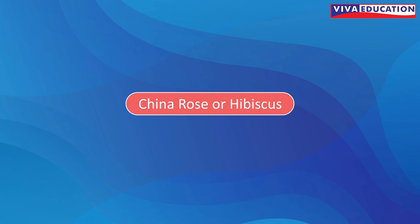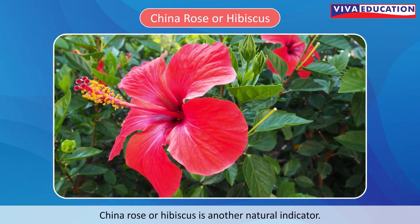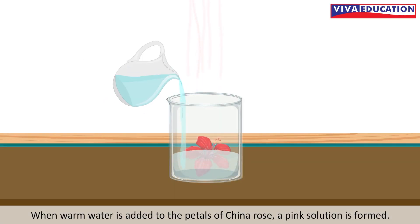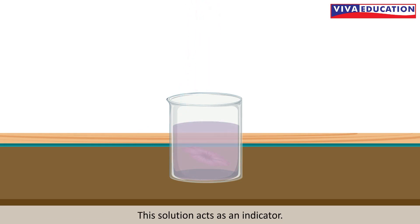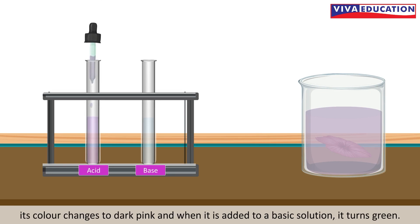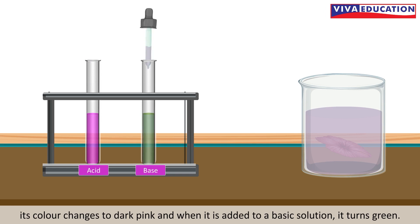China Rose, or Hibiscus, is another natural indicator. When warm water is added to the petals of China Rose, a pink solution is formed. This solution acts as an indicator. When this indicator is added to an acidic solution, its color changes to dark pink, and when it is added to a basic solution, it turns green.